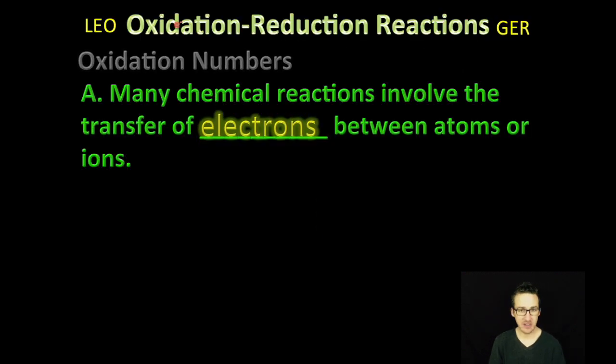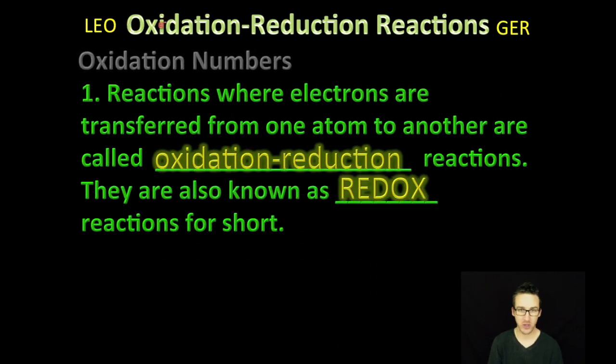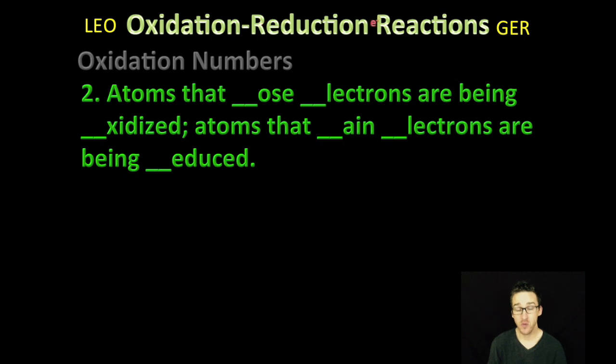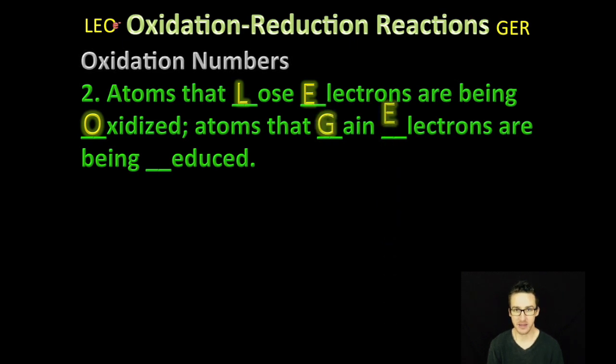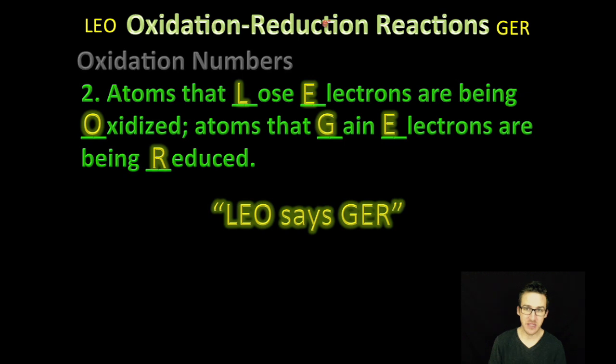Okay, so to start this unit, we need to recognize that many chemical reactions involve the transfer of electrons between atoms or ions. Reactions where electrons are transferred from one atom to another are called oxidation-reduction reactions. They are also known as redox reactions for short. Now, that sounds really scary. Oxidation and reduction, scary sounding words. But really, what we mean is, if something is oxidized, that it is losing electrons. Conversely, if something is reduced, we say that it has gained electrons.